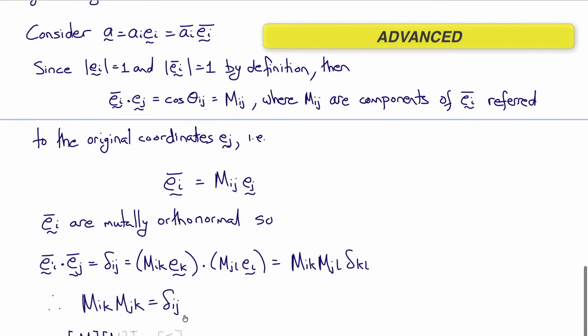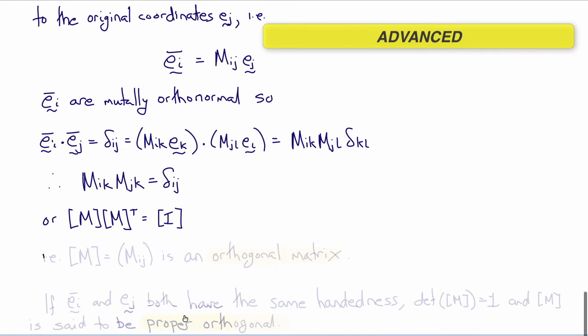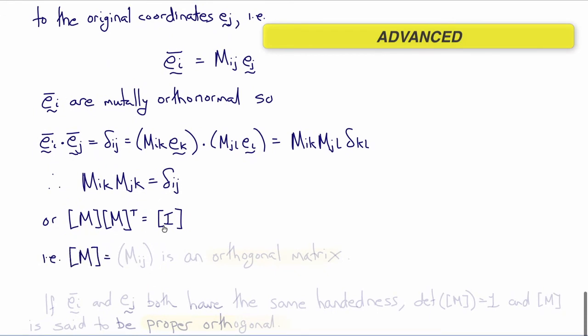Or in matrix notation, m times m transpose equals i. In other words, m, which is the matrix of components mij, the angle cosines, is an orthogonal matrix. It's a rotation, just as we originally posited.